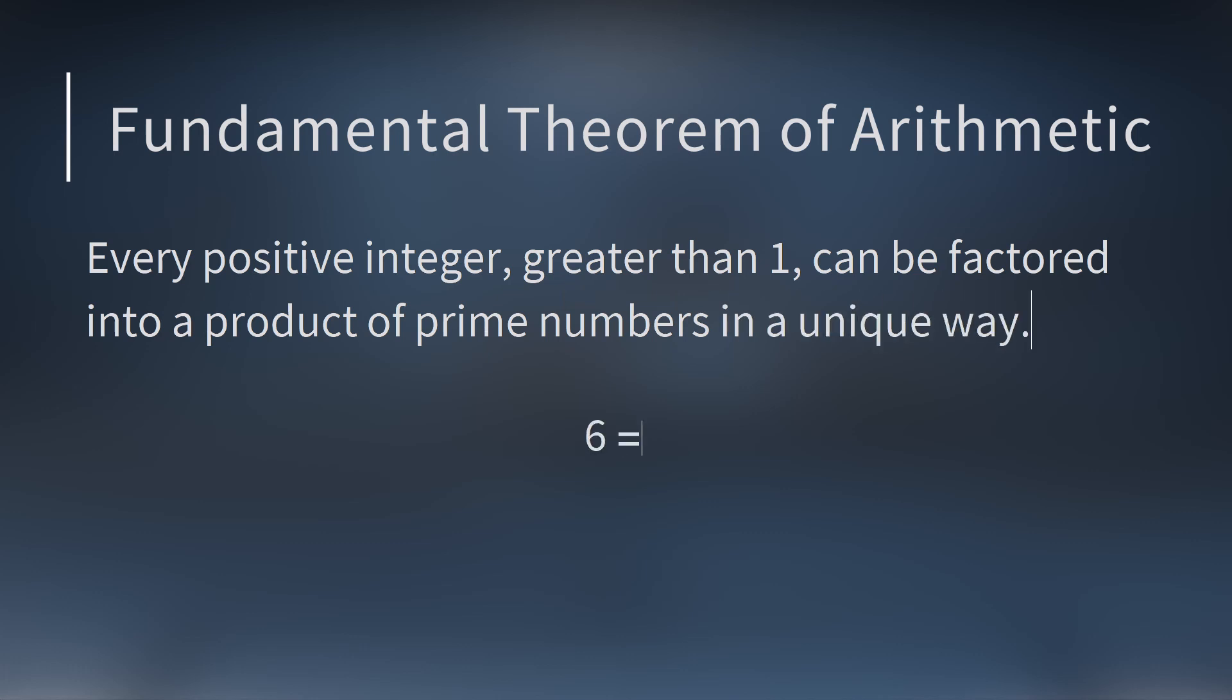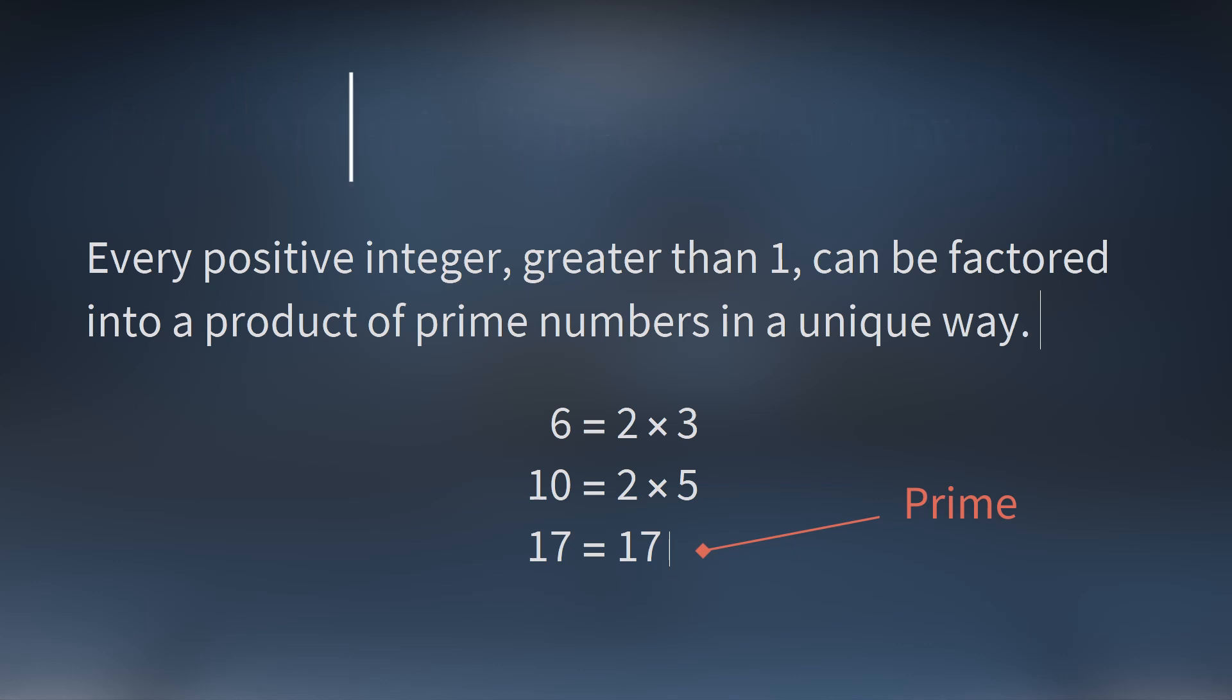For example, 6 is 2 times 3, 10 is 2 times 5, 17 is prime, so it's just 17. You can't break it up into smaller prime numbers.